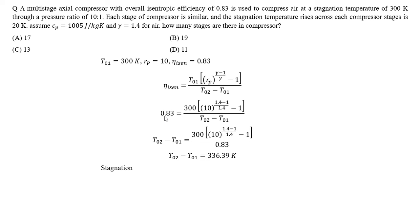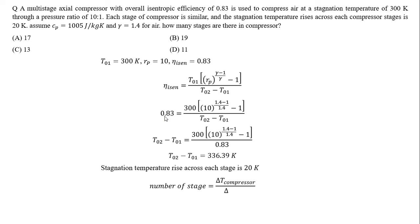The stagnation temperature rise across each stage is given as 20 Kelvin. So the number of stages = ΔT for complete compressor / ΔT for each stage = 336.39 / 20 = 16.81, which rounds up to 17. So a total of 17 stages are required.